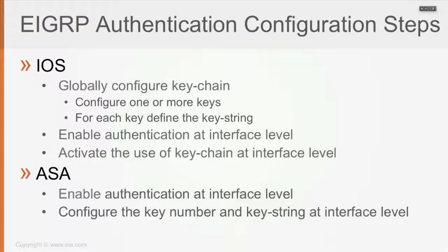On the ASA, the configuration is simpler — it doesn't use keychains. You just go and enable authentication of EIGRP at the interface level, and then also at the interface level, you configure the key number and the key string, because the ASA doesn't support keychains.